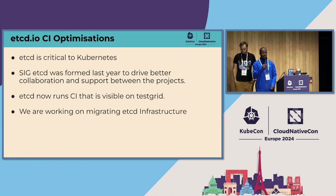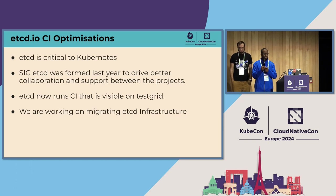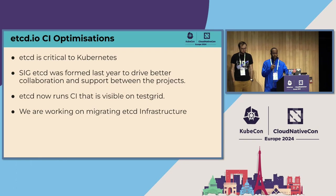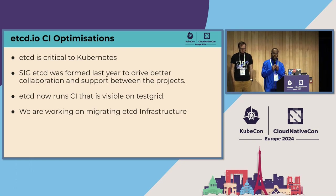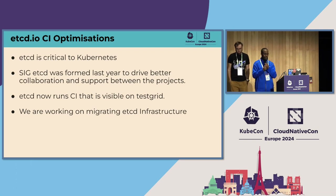On etcd: at the end of last year, etcd joined Kubernetes as SIG etcd. Etcd is very critical to Kubernetes, but they also run some infrastructure that we're trying to take over and manage on their behalf. One thing etcd is looking for that we can help with is better visualization of their tests — they're leveraging TestGrid and have more CI planned, so we're going to help them with that.